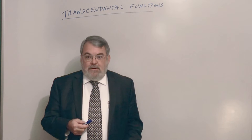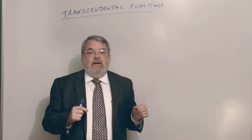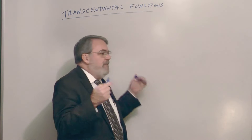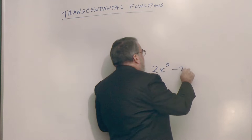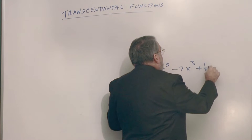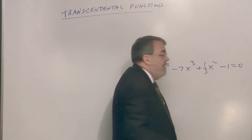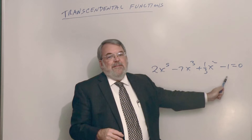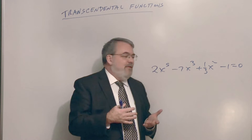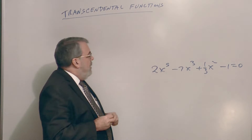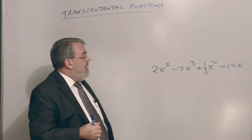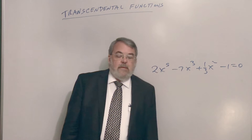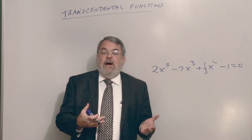A transcendental number is a number which is not the root of a polynomial with rational coefficients. For example, if you had a polynomial like 2x to the fifth minus 7x cubed plus one-third x squared minus 1 equal to 0 — the coefficients are rational numbers, either integers or fractions of integers. The roots of such a polynomial are considered algebraic numbers.